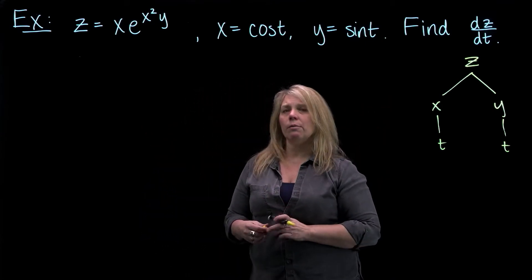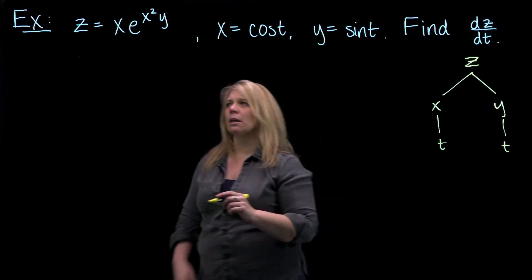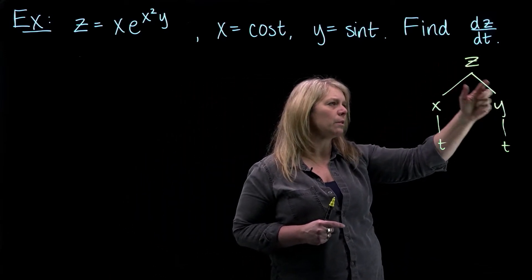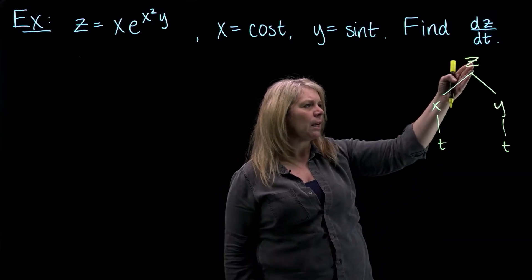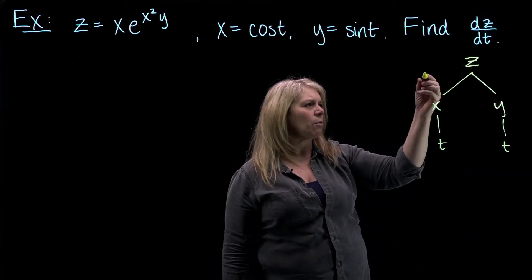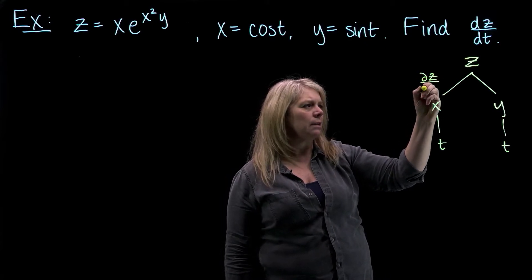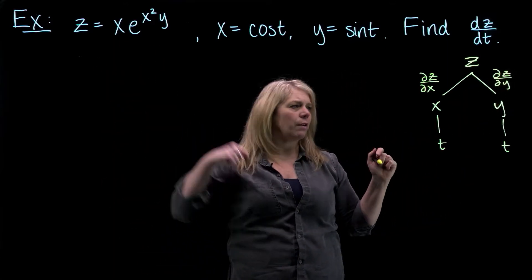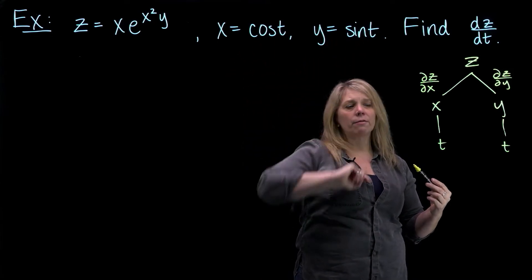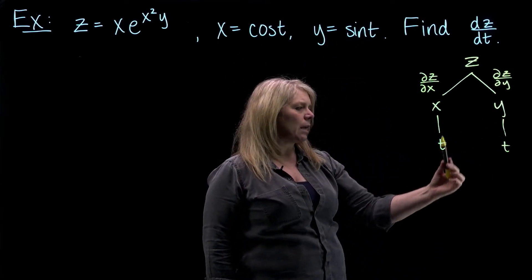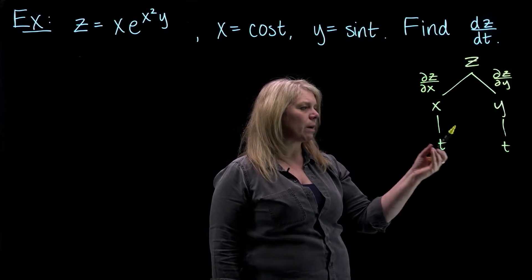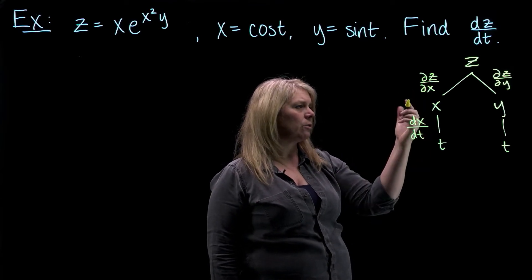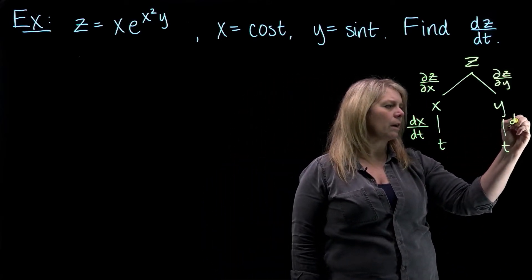I'm going to write down the chain rule we're going to use here, and then we'll actually apply it to this particular problem. So here, z is a function of two variables. When I think about this first level of differentiation, I can differentiate z with respect to x or y, and those would be partial derivatives — del z/del x or del z/del y — because z is a function of two variables. But x and y are both functions of only one variable, so the derivatives of x with respect to t and y with respect to t would be ordinary derivatives. Notice the different d symbols: del for partial derivatives and d for ordinary derivatives.